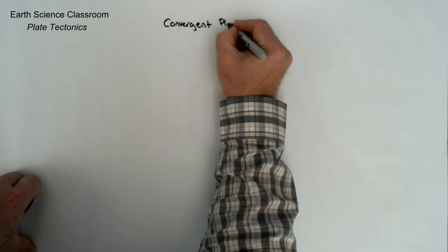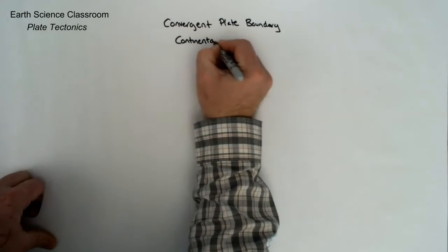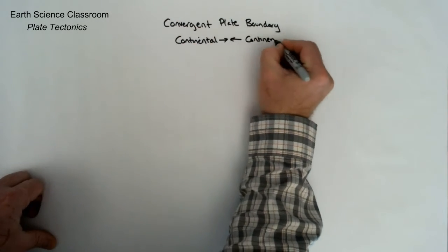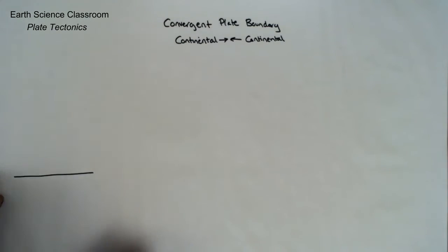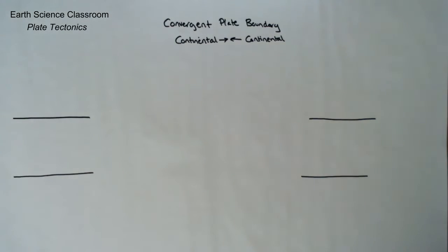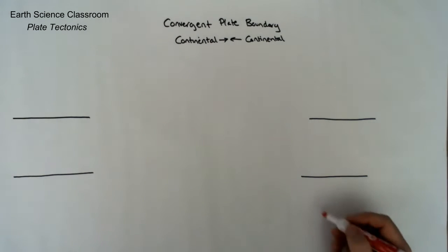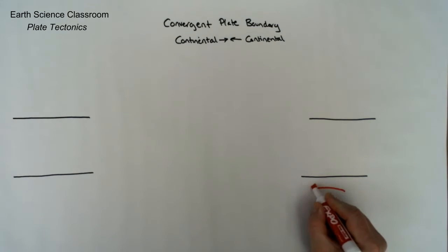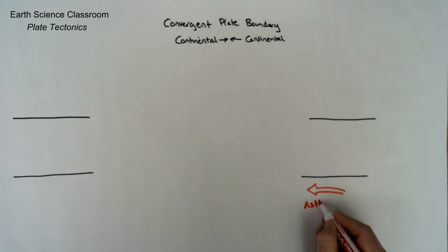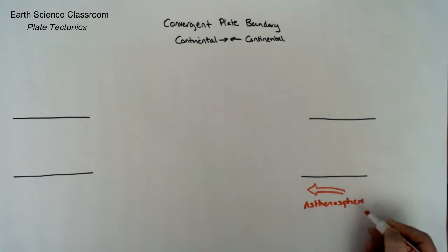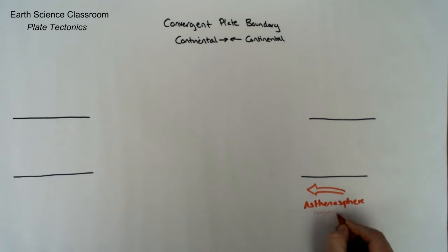In this video, we're looking at drawing out the convergent plate boundary — the continental plate colliding with the continental plate. So two plates of similar or the same composition are colliding on the Earth's surface, and we're looking at the natural features and geomorphology that come about from this type of plate boundary.